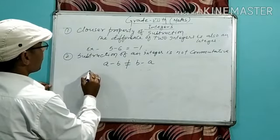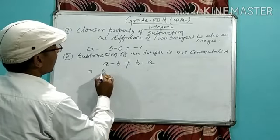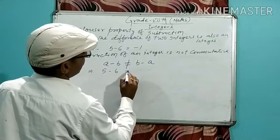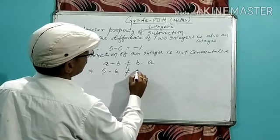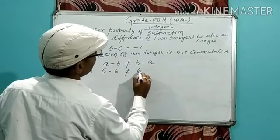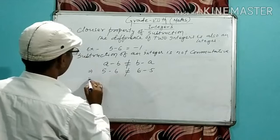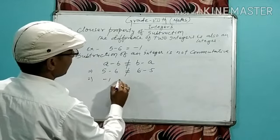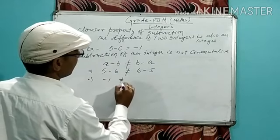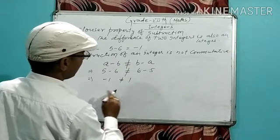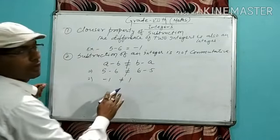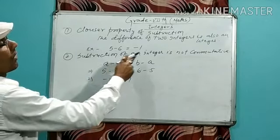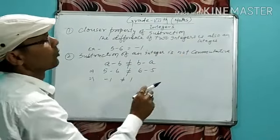For example, suppose a is 5 and b is 6: 5 minus 6 is not equal to 6 minus 5. The result of 5 minus 6 is minus 1, and 6 minus 5 is 1. So subtraction of integers is not commutative.